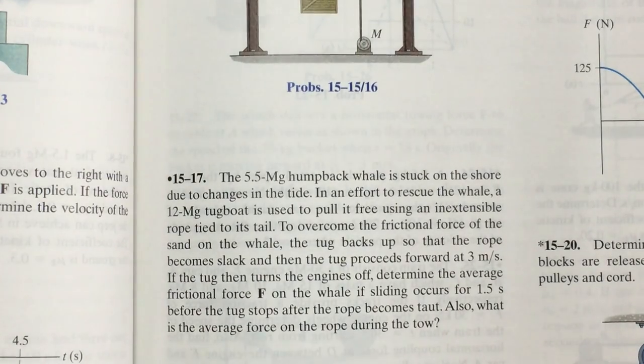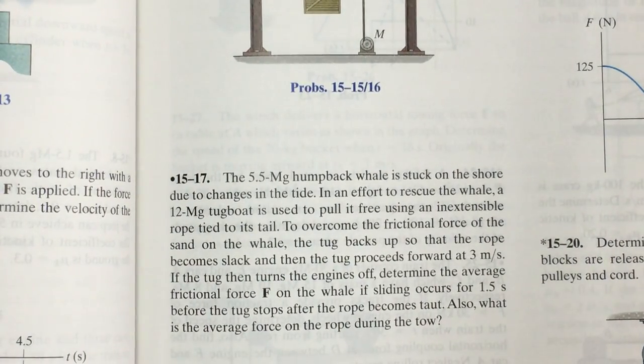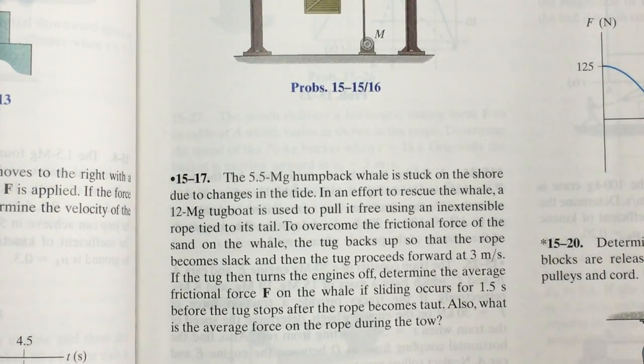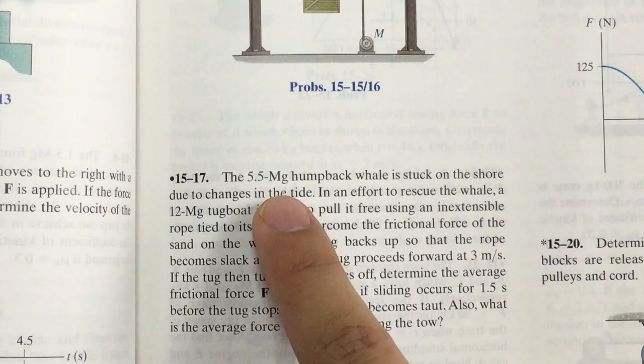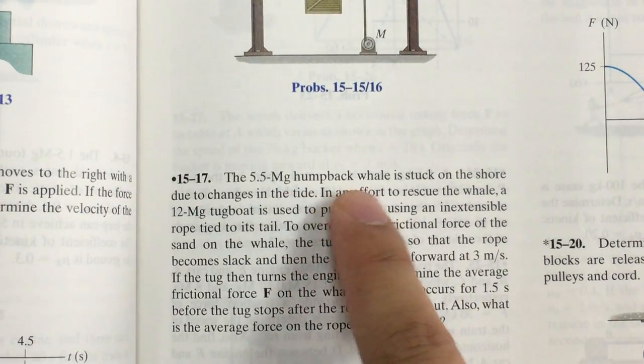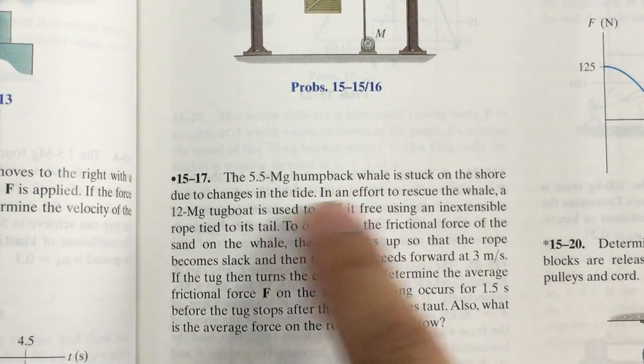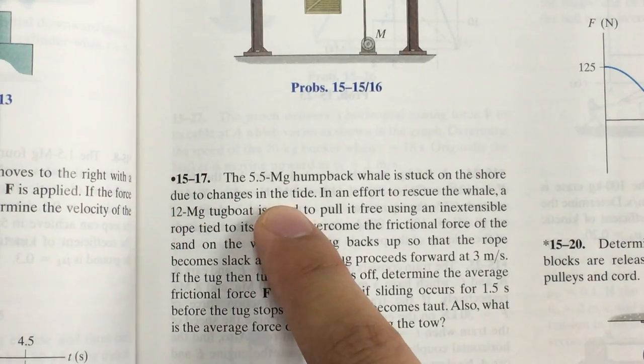In problem 15.7, we are dealing with two masses and two velocities. We have a 5.5 megagram humpback whale which stuck on the shore due to changes in the tide.